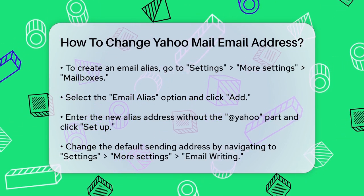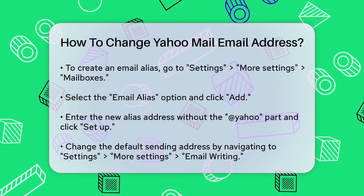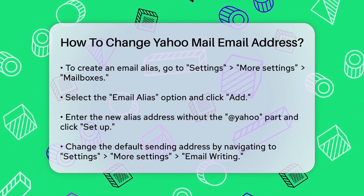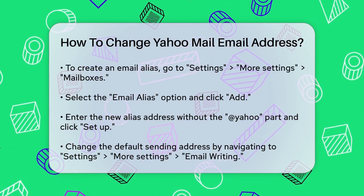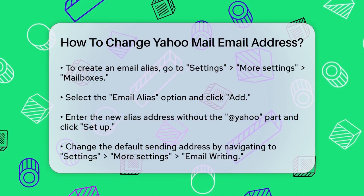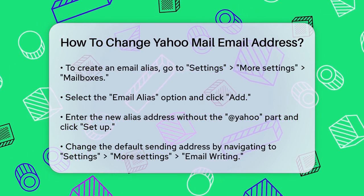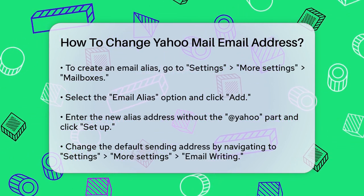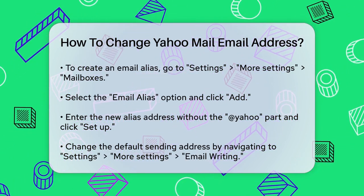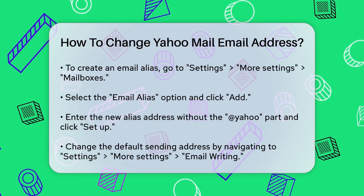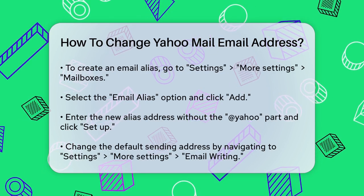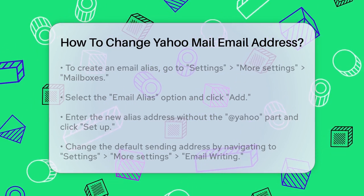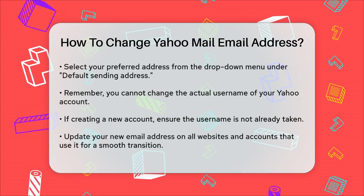Another scenario might be changing the default sending address when you send emails. To do this, log into your account, go to Settings, More Settings, Email Writing. Here, you'll find a drop-down menu under Default Sending Address. Select your preferred address from this menu and click Save to apply the changes.